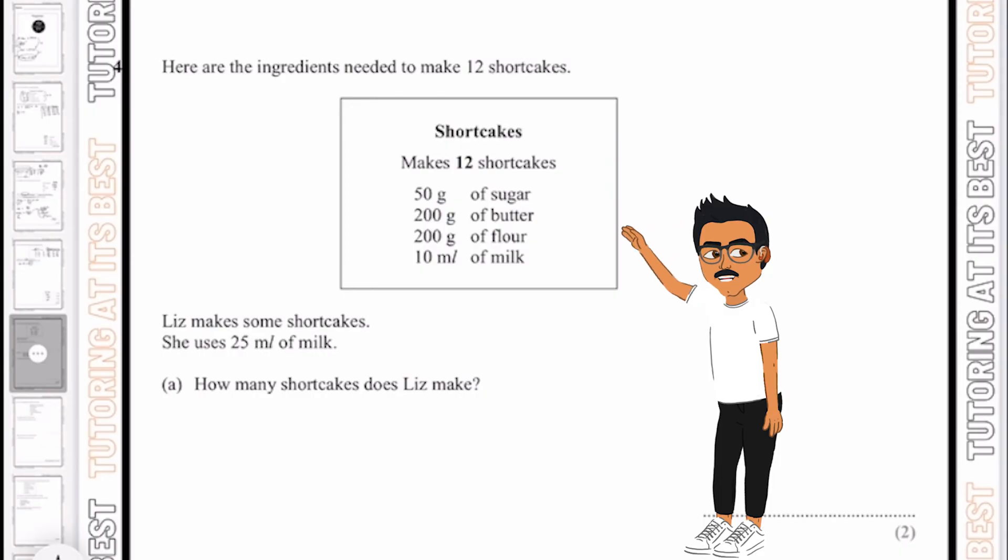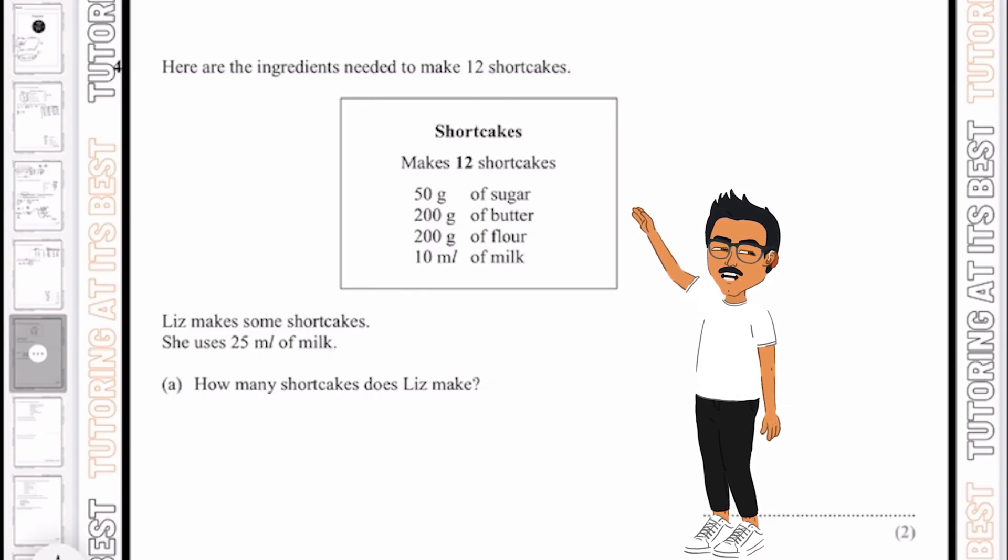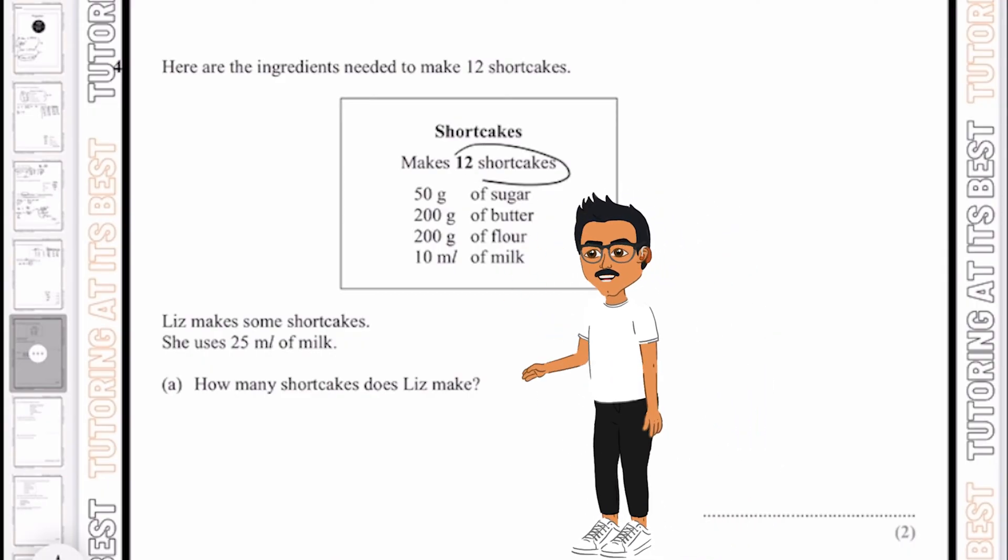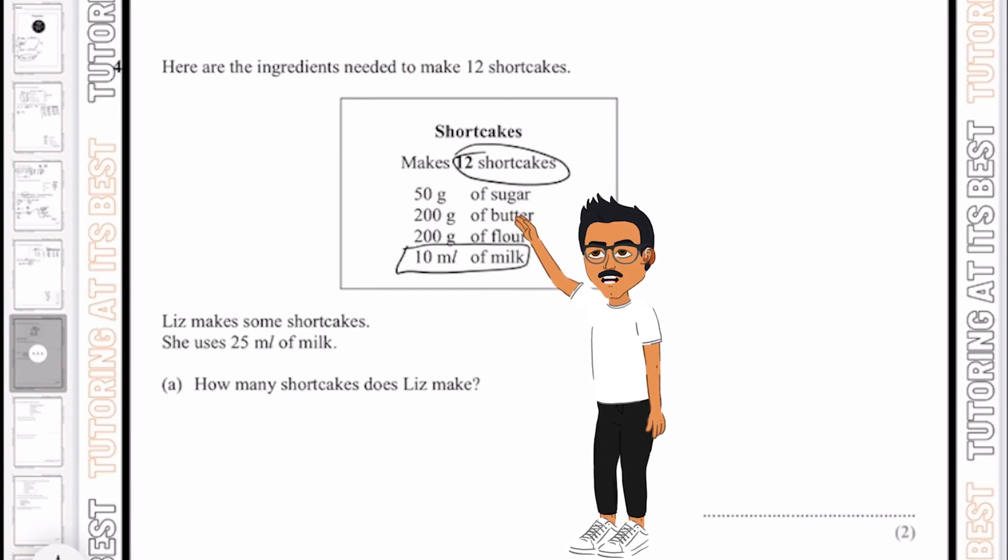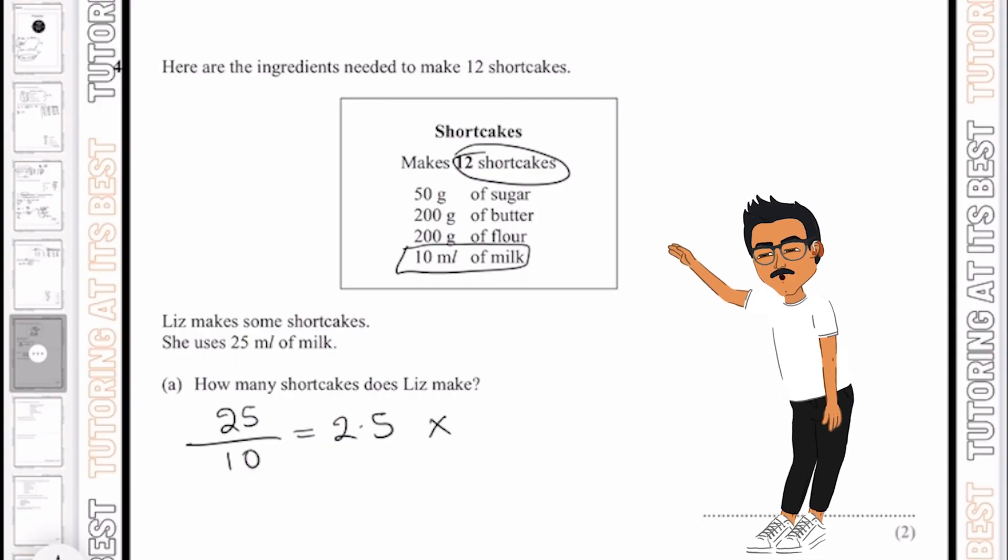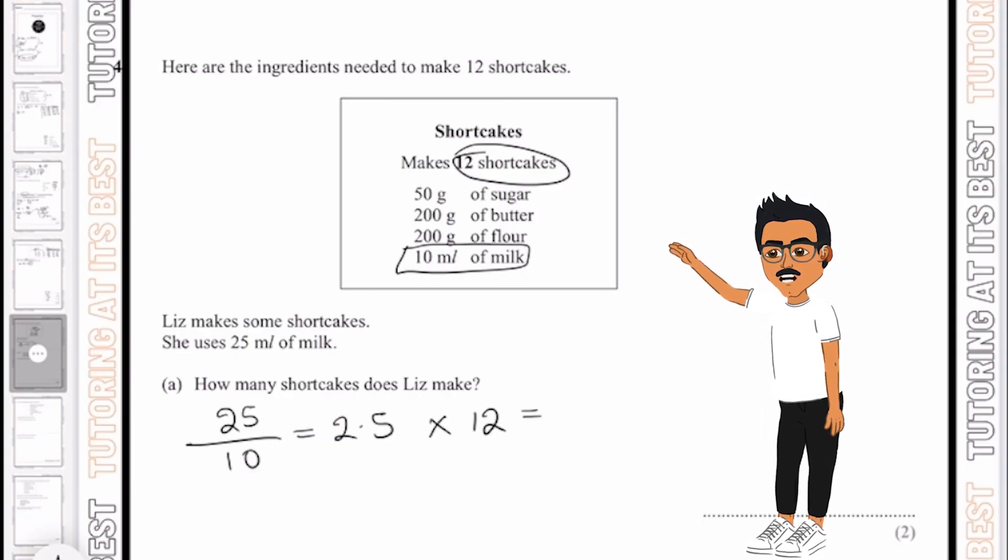So here are some ingredients for me to make 12 shortcakes. Liz makes some shortcakes and she uses 25 milliliters of milk. So how many shortcakes does Liz make? So we understand that for every 12 shortcakes, she uses 10 milliliters. So I'm going to work out the value of one shortcake by simply taking 25 milliliters and dividing it by 10 milliliters, which then gives me 2.5. So now I know that's the amount that we need for one shortcake. I'm going to times that by 12 and that would give me 30.